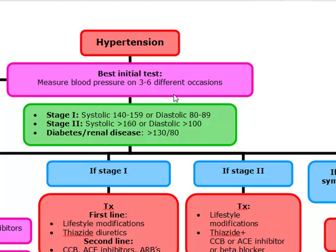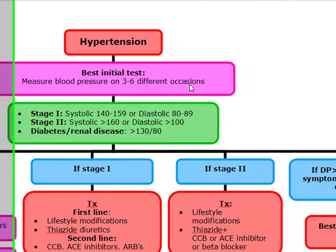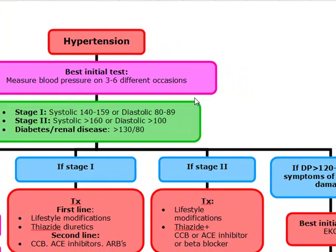The first thing I want to point out is normal blood pressure. Normal blood pressure is classified as a systolic less than 120 and a diastolic less than 80. So for normal, you have to have both: systolic less than 120 and diastolic less than 80.